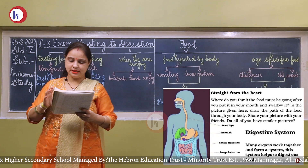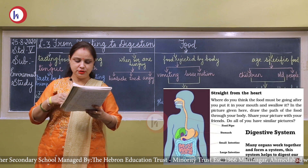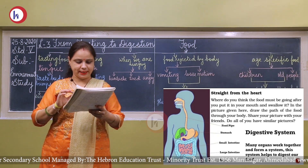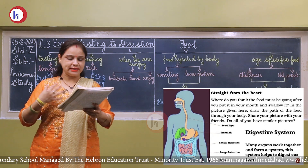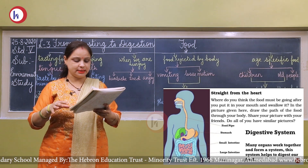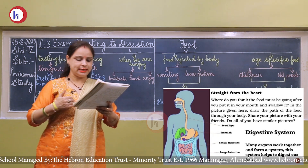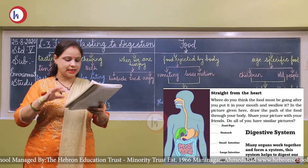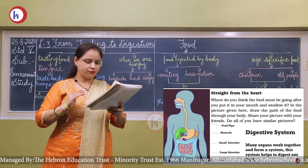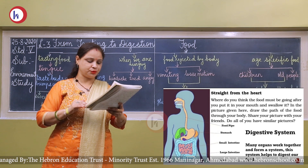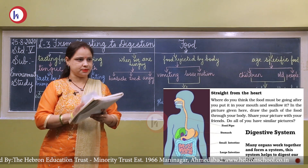Let us understand the digestive system properly. First, the food enters a long tube called the food pipe. Then the food enters the stomach, where it is digested. After that, it enters the small intestine. The undigested food then passes through the large intestine, and finally the waste is expelled from our body through the anus. This is called the digestive system.